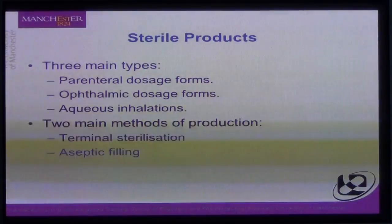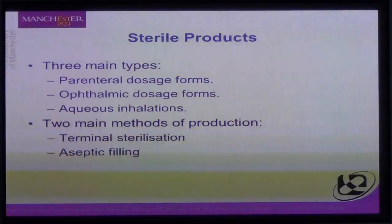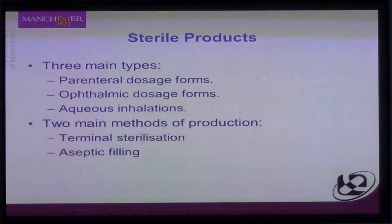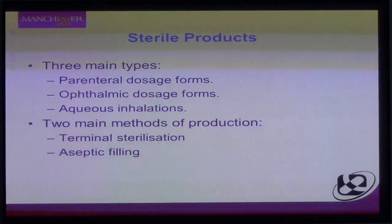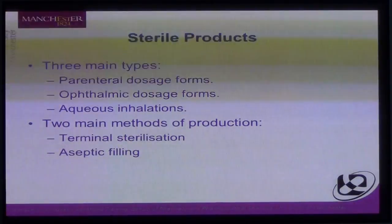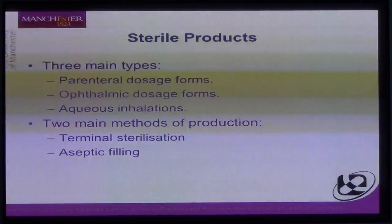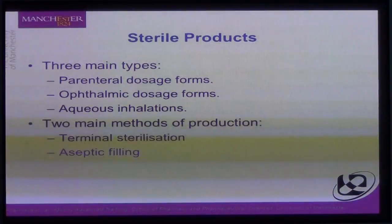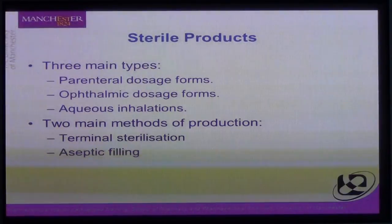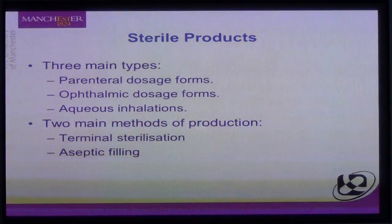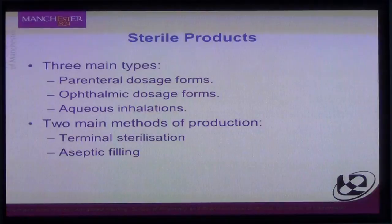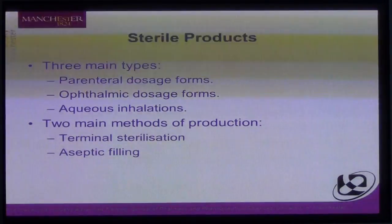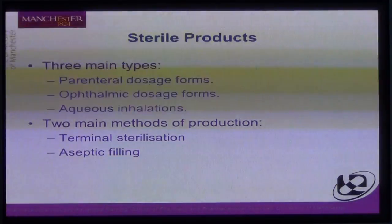In terms of types of sterile products, there are generally three main types available on the pharmaceutical marketplace: parenteral products, which are administered by injection; ophthalmic dosage forms, basically eye drops; and aqueous inhalations, things that you would breathe in. There are two main methods of creating a sterile product: terminal sterilisation, where the product in its final container is subject to a sterilisation cycle, or aseptic filling, where sterile components are put together in an aseptic environment.